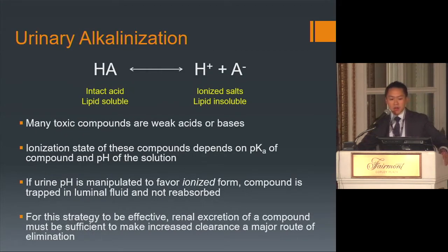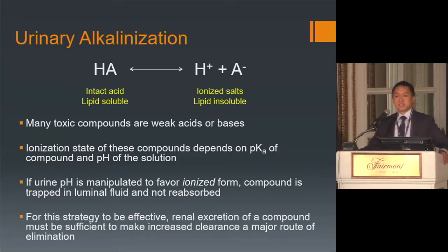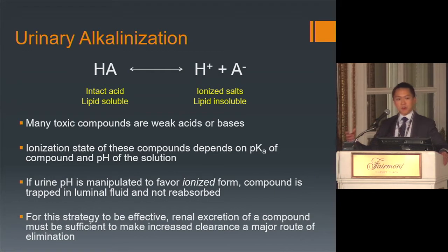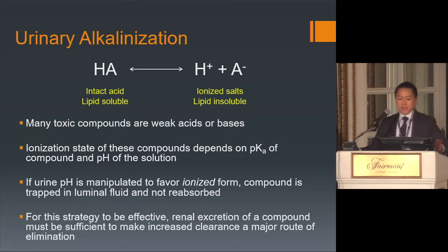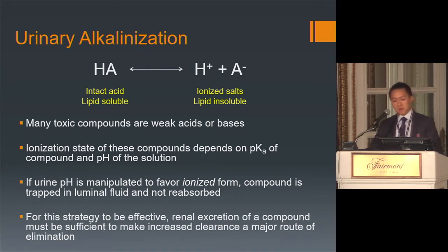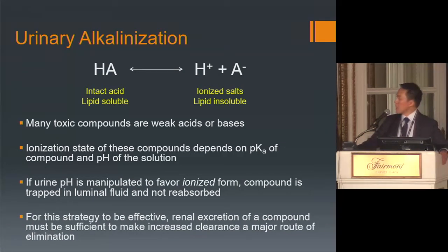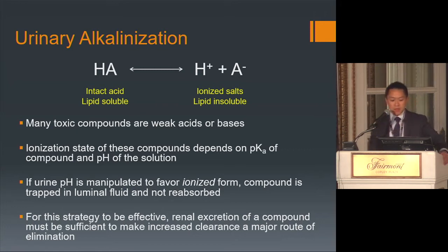Urinary alkalinization is based on the principle that many toxic compounds are weak acids or bases existing in both intact and ionized forms in the blood. The proportion in ionized form depends on the compound's pKa and the pH of the solution. By manipulating urine pH to favor the ionized, lipid-insoluble, water-soluble form, you can trap the compound in the tubular lumen, preventing reabsorption and improving urinary excretion. This strategy requires that renal excretion be a major route of elimination for the substance.